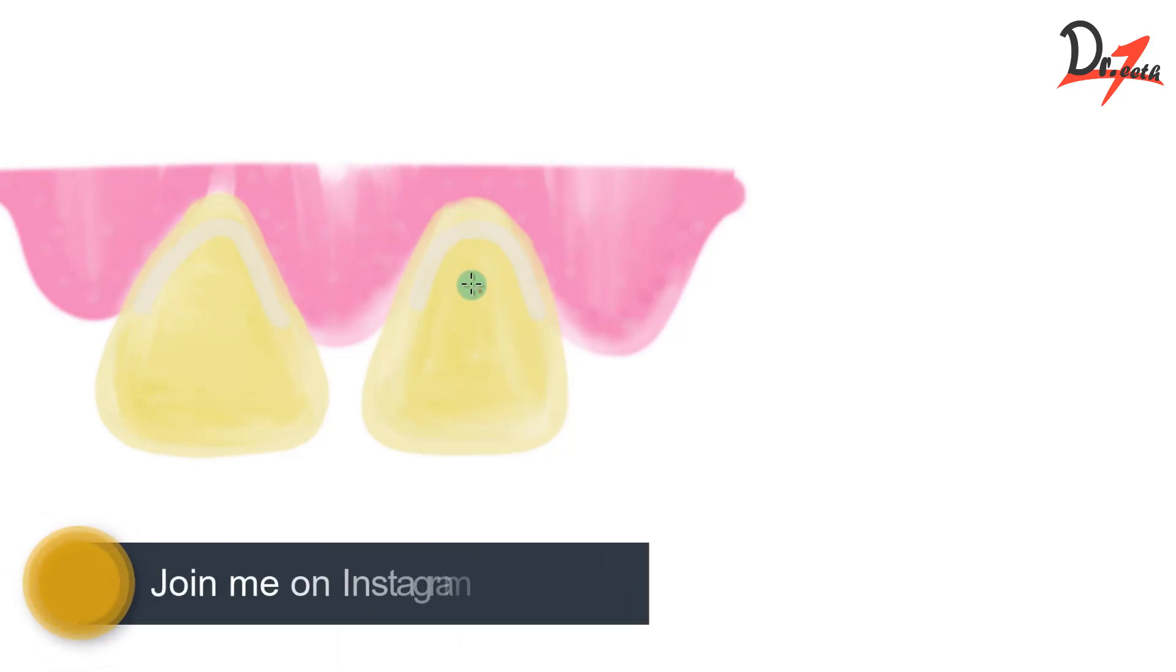Now let us see how this lesion progresses, how the caries start and how it proceeds. Initially we will have a demineralized dull white area, as you can see, that will be seen along the gum line on the labial aspect of maxillary incisors. Obviously the parents won't be able to detect it. Then these lesions will eventually become cavities.